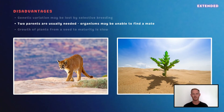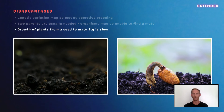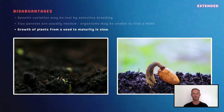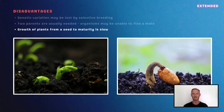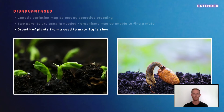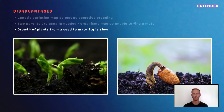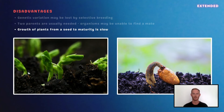Another disadvantage of sexual reproduction is that two mates are needed, although some plants can self-pollinate. This means that reproduction may not be possible if there are no potential mates nearby. Finally, the growth of new plants from seed to maturity takes time, and seeds contain only a small amount of stored food, which reduces the chances of survival.